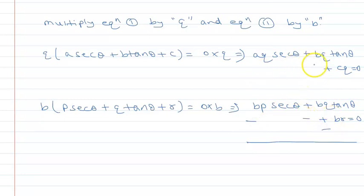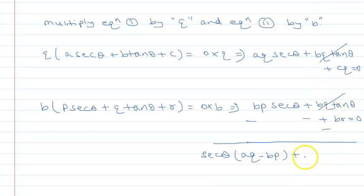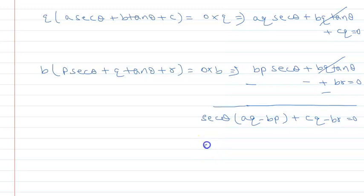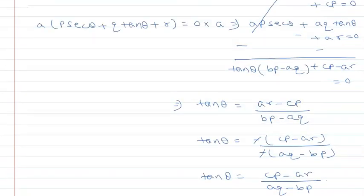After the bq·tan θ terms cancel and sec θ is isolated, we get: aq − bp + cq − br = 0, so sec θ = (br − cq) / (aq − bp).